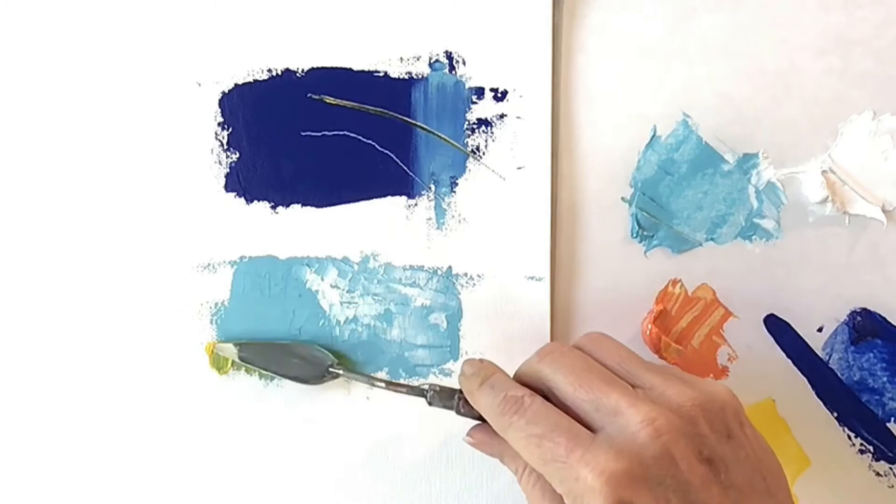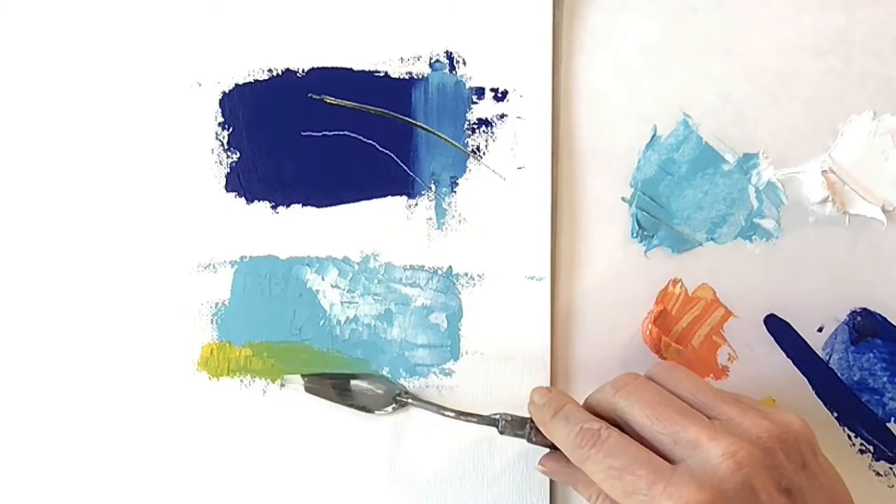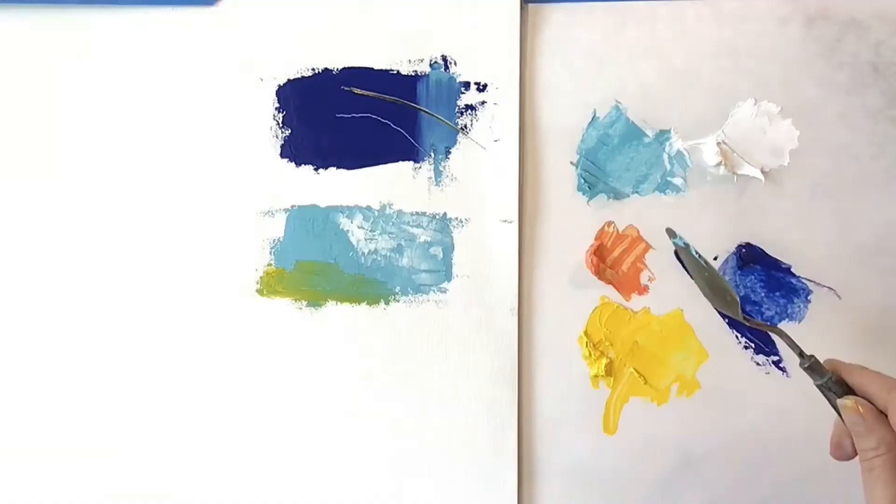Here I'm going to take the yellow and push it lightly into the blue paint to create a beautiful green blend. You can see that I am using a light touch and moving the knife back and forth also helps in the blending.